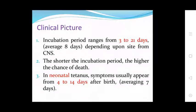The toxin interferes with the release of inhibitory neurotransmitters, leading to muscle contractions and spasms. Clinical features: the incubation period is 3 to 21 days, with an average of 8 days, depending on the distance from the CNS. The shorter the incubation period, the higher the chance of death. Neonatal tetanus symptoms usually appear 4 to 14 days after birth, averaging 7 days.